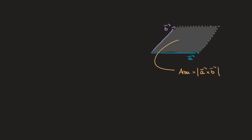In this video, we're going to see why this is the formula. To fully appreciate why, let me quickly remind you of the formula for calculating the magnitude of a cross product. The magnitude of the cross product of a and b is given by the magnitude of vector a times the magnitude of vector b times the sine of the angle between the two vectors a and b.